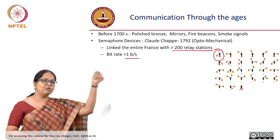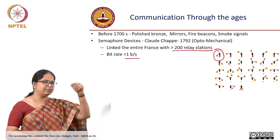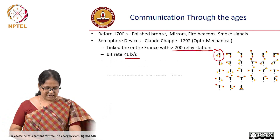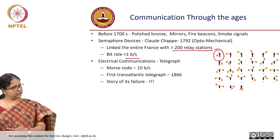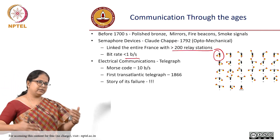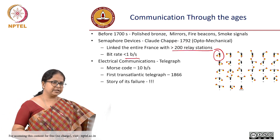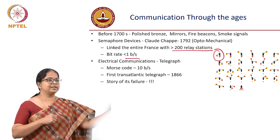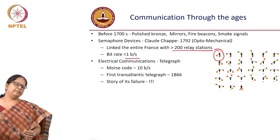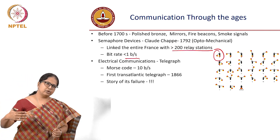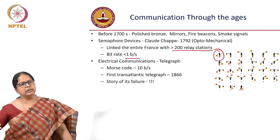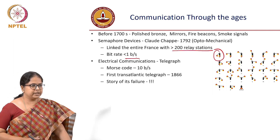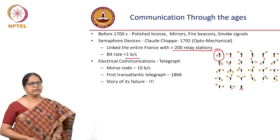The bitrate depended on how fast you could move the flag — about once per second. After that, electrical communications took over because semaphore required line of sight, a large number of relay stations, and many trained people. From semaphore signaling, communication moved on to electromagnetic or electrical means. The first electrical method was the telegraph.